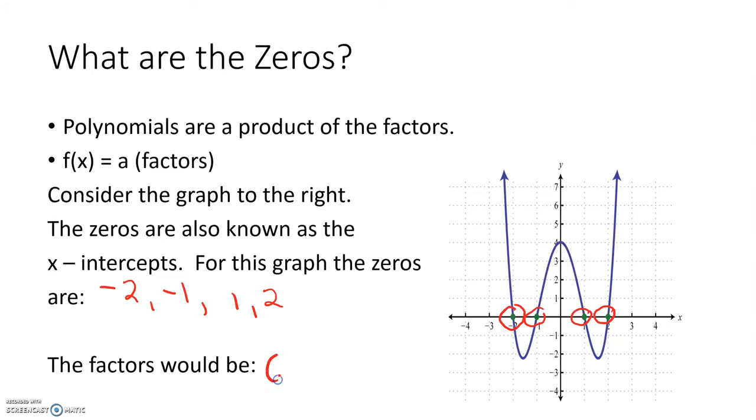These are our zeros, so that makes our factors x plus 2, x plus 1, x minus 1, and x minus 2.